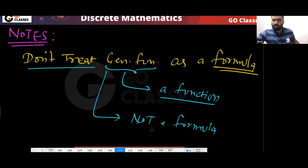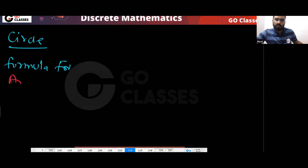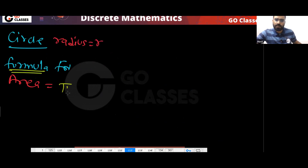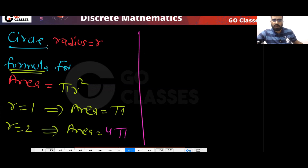Let me explain with an example. If you have a circle with radius R, then the formula for its area is pi r squared. If r equals one, the area is pi. If r equals two, the area is four pi. So pi r squared is the formula for the area of a circle — you can replace R with any value you want.